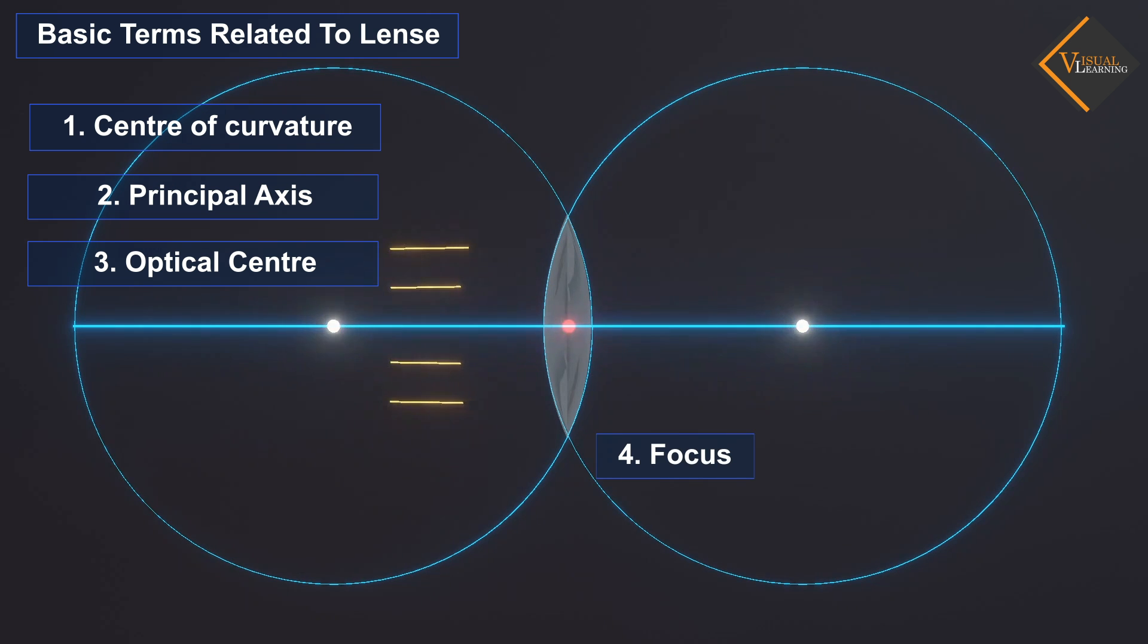Focus: Focus is the point onto which collimated light parallel to the axis is focused. The distance between focus and the optical center is known as focal length.